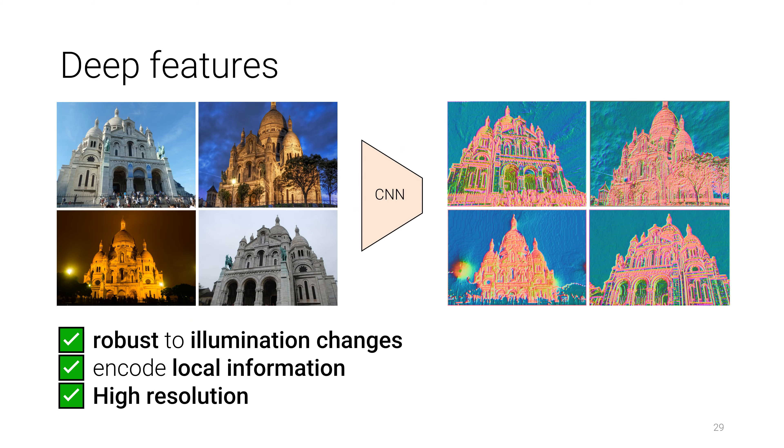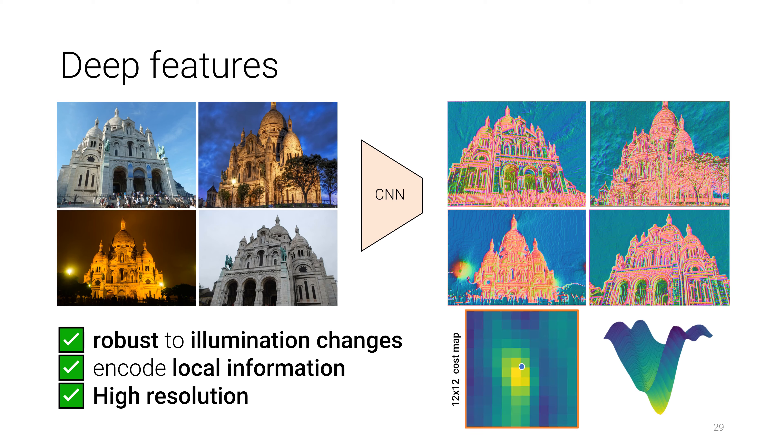The system requires deep features which are both robust to illumination changes and encode local appearance information in high resolution. With locally smooth and accurate featuremetric cost functions around matched detections, even coarse priors can converge accurately.